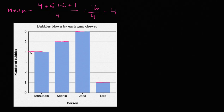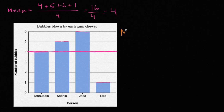Let me mark that with a bold line right over here — this is the mean number of bubbles blown. Now I want to figure out the mean absolute deviation, or MAD. What we want to do is take the mean of how much each of these data points deviates from the mean.